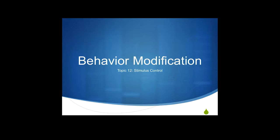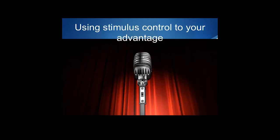Greetings all, here we go, more on stimulus control. Now what we want to think about here is that this chapter really talks about antecedent control, but functionally what this is, is looking at modifying things that happen before your behavior in order to change your behavior or change the consequences for your behavior, or put you in touch with new consequences.